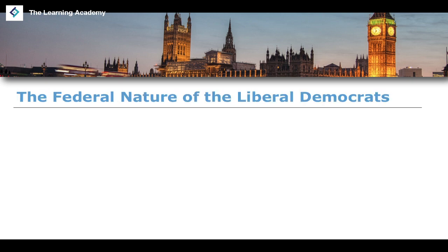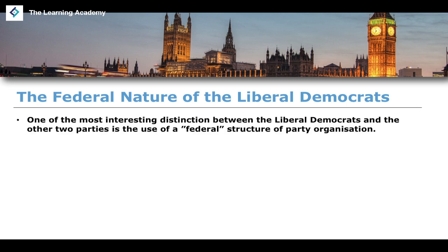Unlike the previous two parties we've been discussing, the Liberal Democrats are quite unique in that they operate a federal structure to the party organisation. There is what can be described as the Federal Party, which we're going to talk about in great detail, and then there are also smaller subgroups that constitute the local parties for the Liberal Democrats. This is quite unique and different to the previous two structures, and if given an exam question asking you to discuss the differences and similarities between these three political parties in terms of their structure, you could make reference to this very unique aspect.